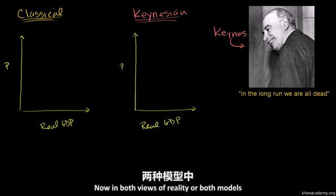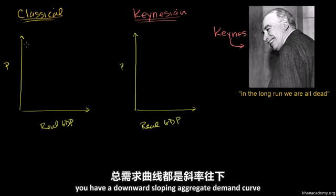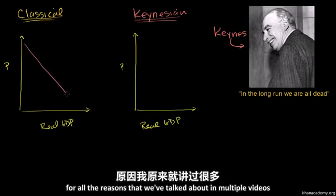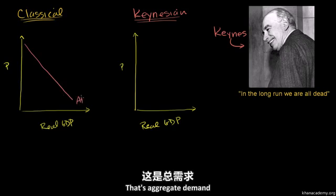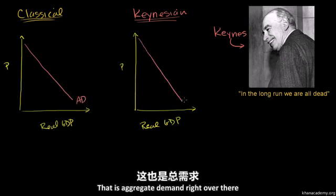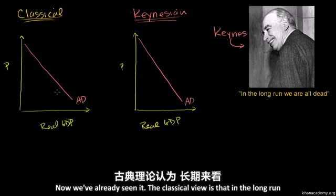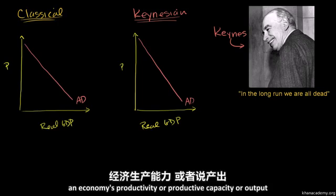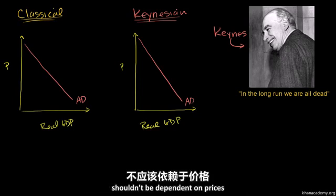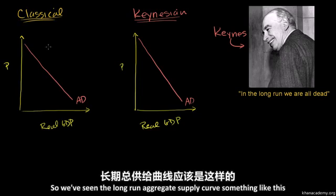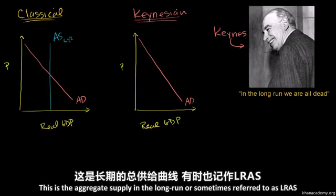Now, in both views of reality — both models — you have a downward sloping aggregate demand curve, for all the reasons we've talked about in multiple videos. That's aggregate demand right over there. In the classical view, in the long run, an economy's productivity or productive capacity — its output — shouldn't be dependent on prices. So we have the long-run aggregate supply curve, something like this. This is the long-run aggregate supply curve.